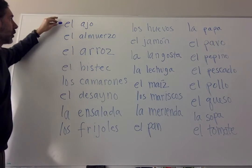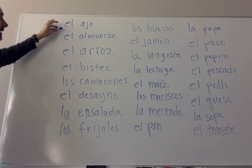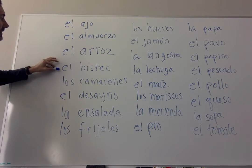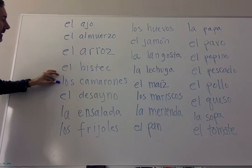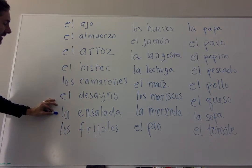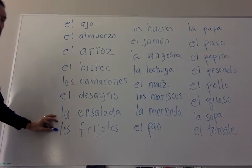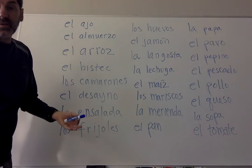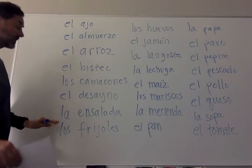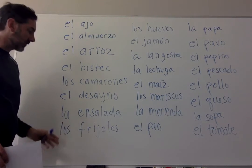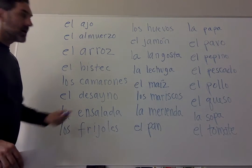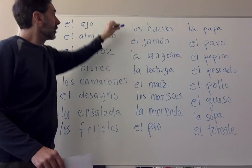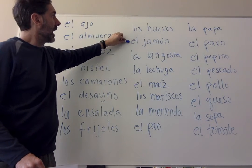Ajo — garlic; almuerzo — lunch; arroz — rice; bistec — steak; camarones — shrimp; desayuno — breakfast; ensalada — salad; and frijoles. Frijoles negros or frijoles verdes — frijoles by itself usually means black beans, frijoles verdes means green beans. Vamos a la otra columna. Let's go to the next column: los huevos, el jamón, la langosta, la lechuga, el maíz, los mariscos, la merienda.